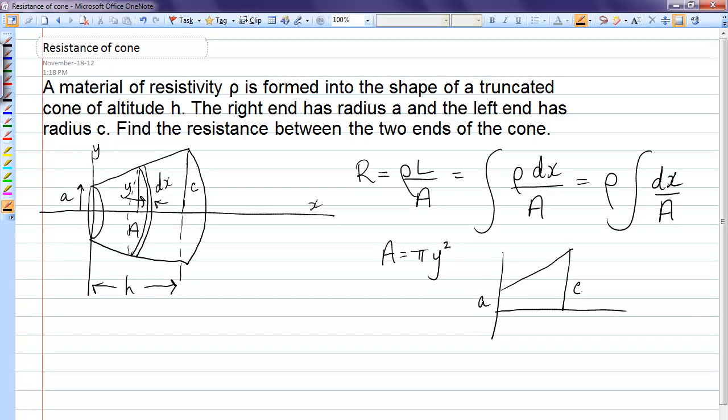A and C are the heights of that line, H dimension, and this is y and x. So it's a straight line. The equation of the straight line is y equals mx plus b. In our case, the slope would be (c - a) over h times x, and the y-intercept would be a. So that's the equation of the line, and that's how you relate y to x.